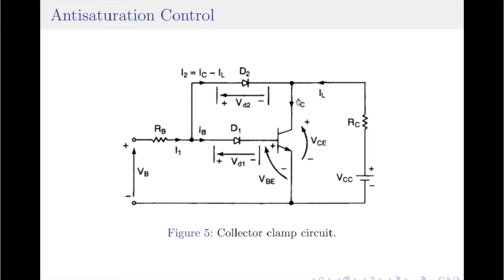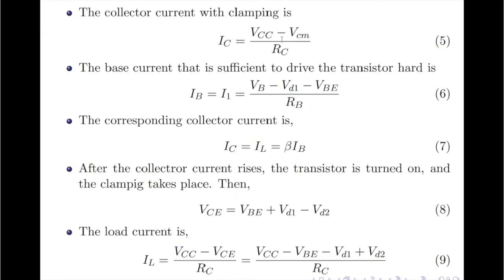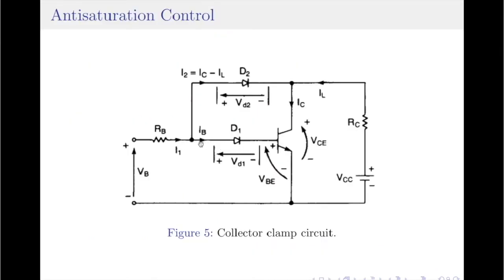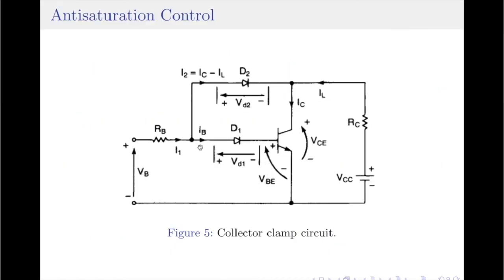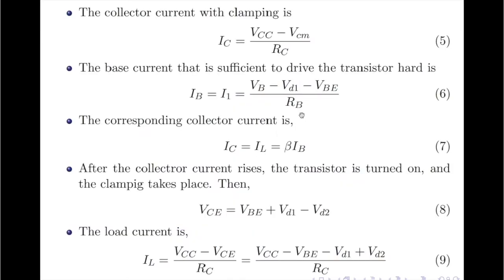In the Baker's clamp circuit, the collector-to-emitter voltage is clamped to a predetermined level and the collector current is given by applying KVL to the collector-emitter loop: IC equals (VCC minus VCM) divided by RC, where VCM is the clamping voltage and VCM should be greater than VCE saturation. The base current IB sufficient to drive the transistor into hard saturation can be obtained by applying KVL to the base-emitter loop. Therefore, IB is given by (VB minus VD1 minus VBE) divided by RB. Once you find IB, you can write an equation for the collector current IC because they are related by IC equals beta times IB.